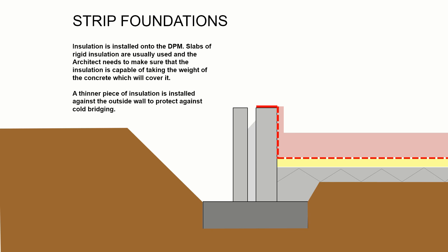On top of the DPM, we place thick rigid slabs of insulation. These must be capable of taking the weight of the floor slab and all activity within the building, passing through the insulation down to the ground — there's no point using insulation that will compress under load. A thinner piece of insulation also passes upwards along the wall edge to prevent any gap in insulation through the wall, wrapping it entirely and avoiding cold bridges.